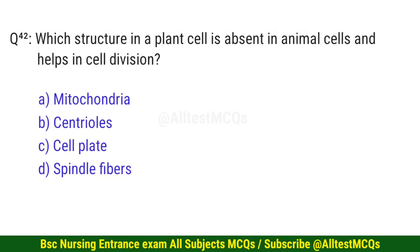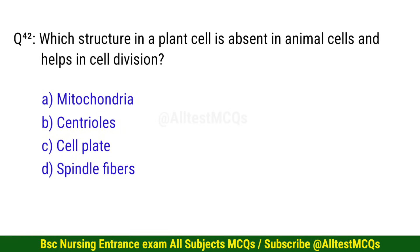Question number 42. Which structure in a plant cell is absent in animal cells and helps in cell division? The right option is C: Cell plate.